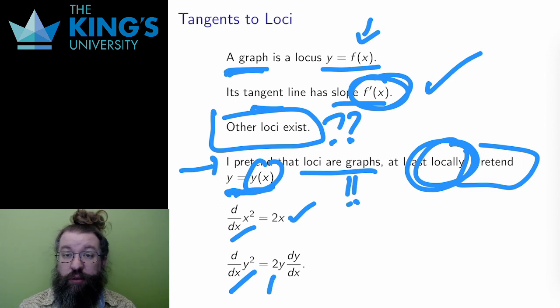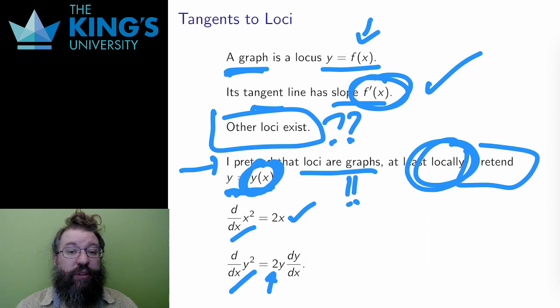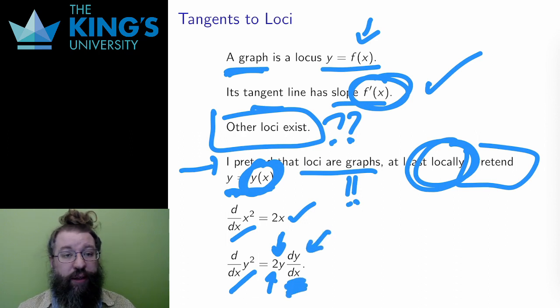Y squared has an outside, y squared, and has an inside, some y of x that I am pretending exists. The derivative is the derivative of that outside, 2y, times the derivative of the inside, dy over dx, whatever that is.